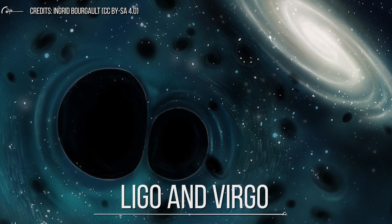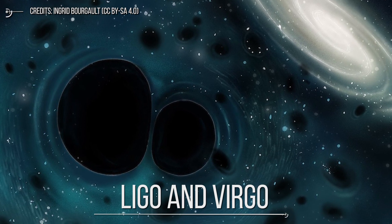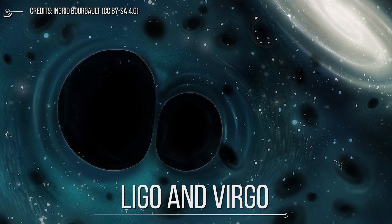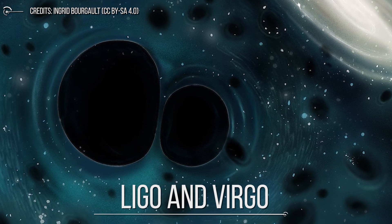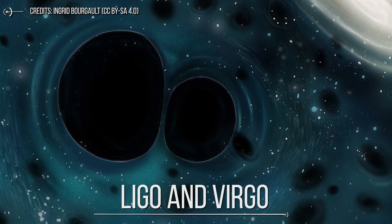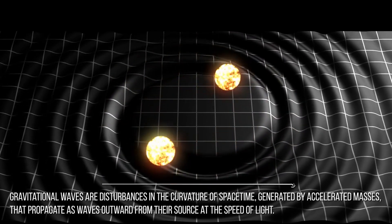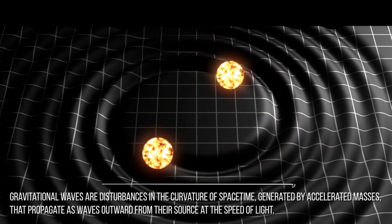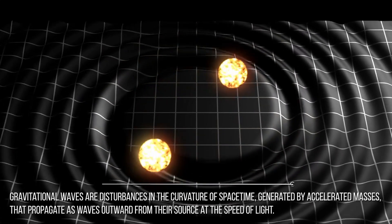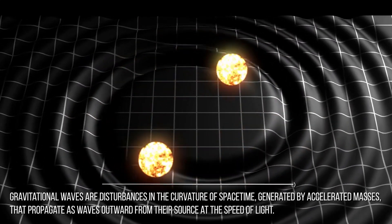All of this was made possible thanks to LIGO and Virgo, the famous network of interferometers that observed the deep sky in order to detect gravitational waves. Gravitational waves are disturbances in the curvature of space-time, generated by accelerated masses that propagate as waves outward from their source at the speed of light.